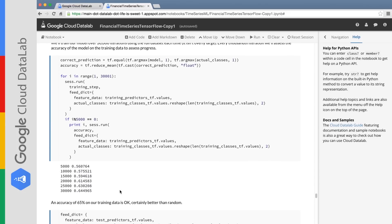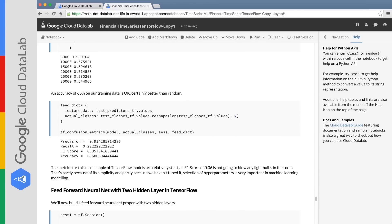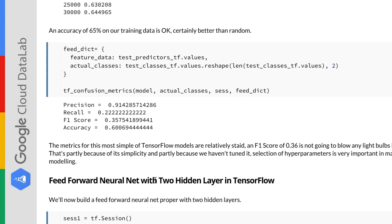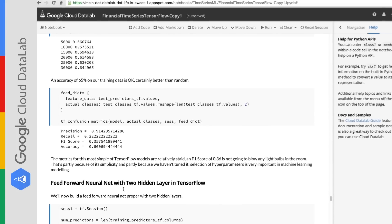Now let's go ahead and train our model. An accuracy of 65% on our training data is okay, certainly better than random. Now let's look at some metrics which will show how well our model performed on our test data. We have an accuracy of 60% and an F1 score of 0.357. The F1 score is a rounded measure of how well an algorithm performs. Accuracy of 60% is okay and an F1 score of 0.357 is okay. It's sort of what you'd expect from a simple model.